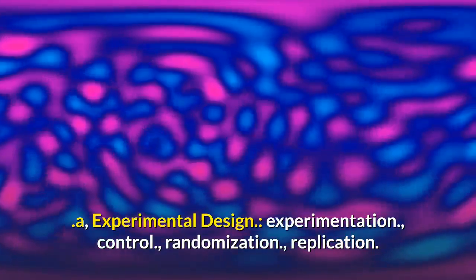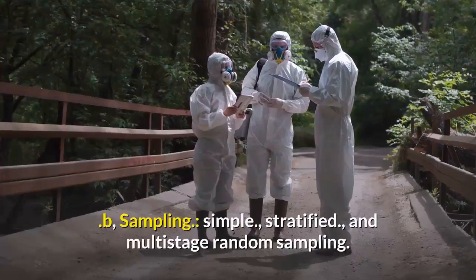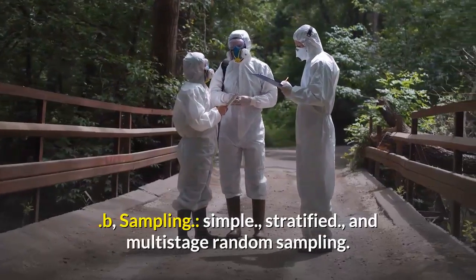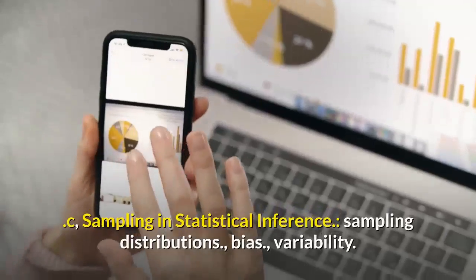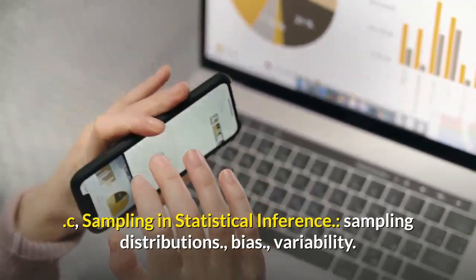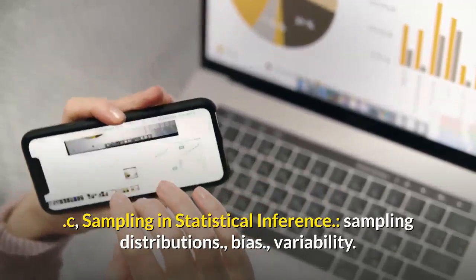Experimentation, control, randomization, replication. B. Sampling: simple, stratified, and multi-stage random sampling. C. Sampling in statistical inference: sampling distributions, bias, variability.